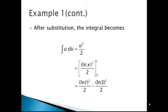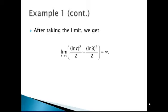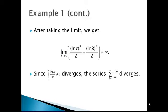Replacing u with x again, we have the natural log of x squared divided by 2, evaluated from 3 to t. Evaluating at the upper bound and subtracting the lower bound gives us the natural log of t squared over 2 minus the natural log of 3 squared over 2. Taking the limit as t approaches infinity, we get infinity. This means the integral diverges, and according to the integral test, if the integral diverges then so does the series.